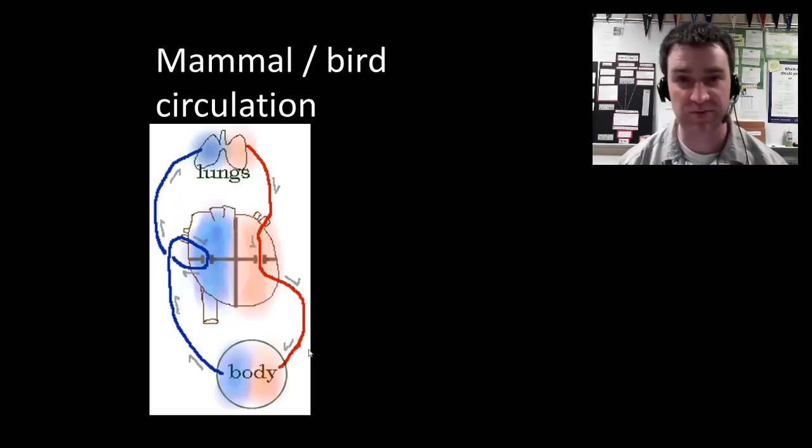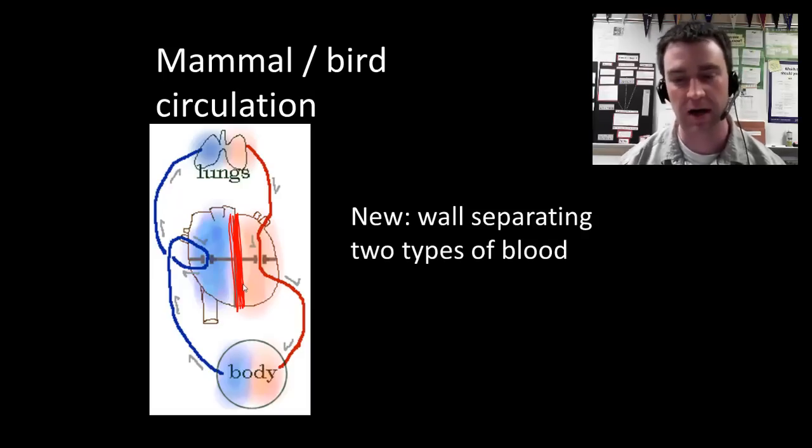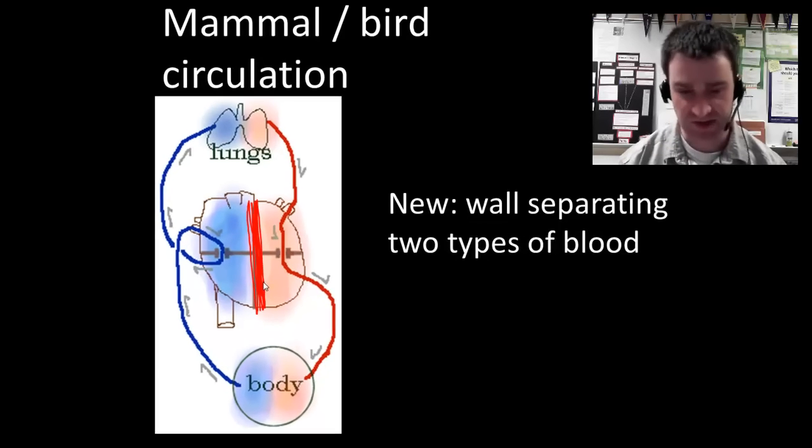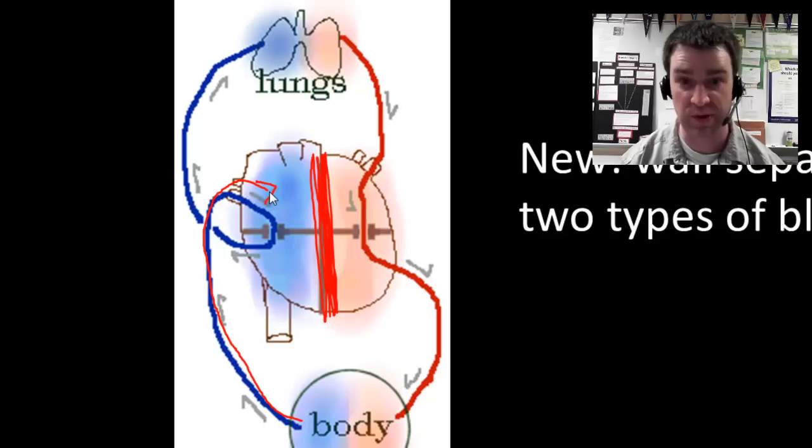They retain the double loop circulation that the amphibian system had, with its advantage of being faster. And they're going to fix the problem of mixture of the two types of blood by simply having this wall-like structure in the heart. Your book calls that the septum that prevents the blue and red blood from mixing. So here is blue blood returning back from the body. It comes back to an atrium, the sort of entryway to a heart.